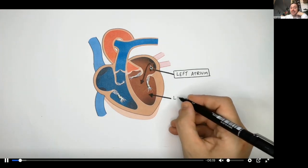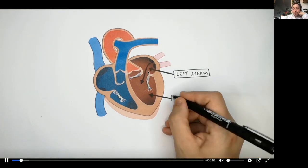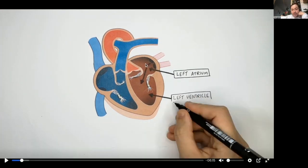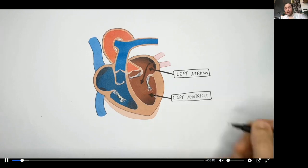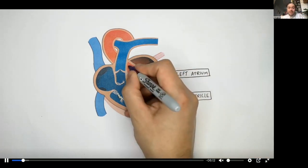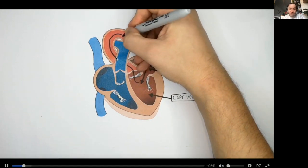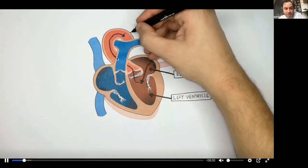Blood is pumped into the left ventricle. So the top chambers are the atria, and these here are the ventricles. Blood is then pumped from the left ventricle out of the aorta.